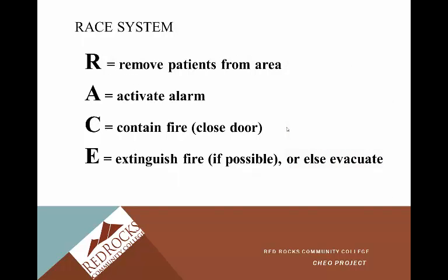You'll be hearing the RACE acronym many times — you'll be tested on it throughout your careers in healthcare. R is for Remove the patient from the area. A is to Activate the alarm. C is to Contain the fire by closing the door. E is to Extinguish the fire if possible, or else Evacuate. Go ahead and memorize this — you'll need it for your test for this course and you'll need to know it forever.